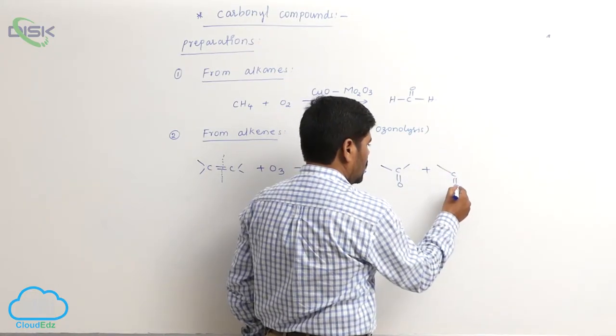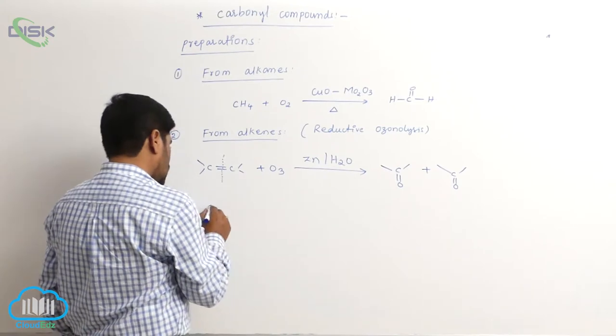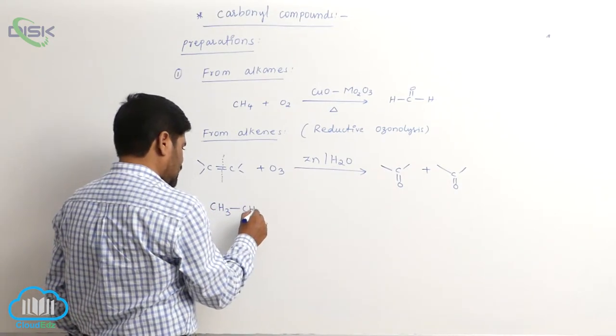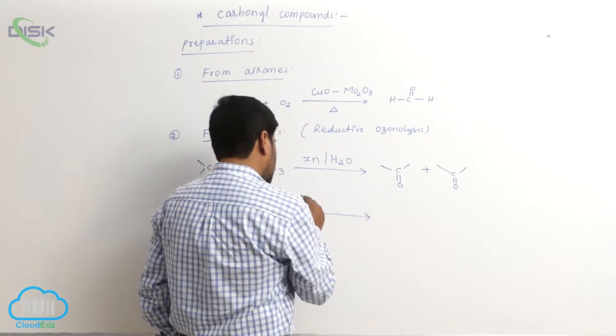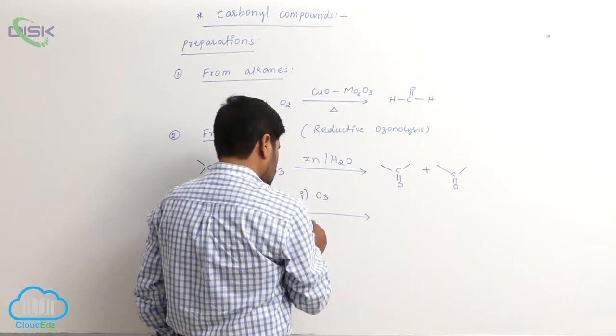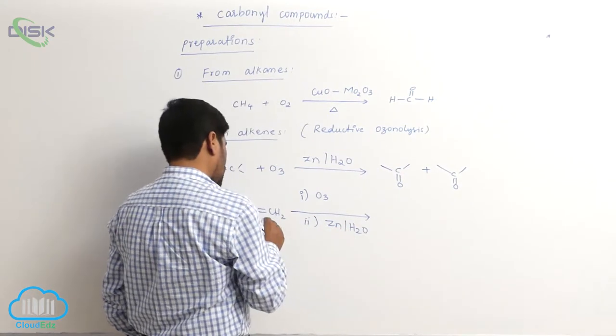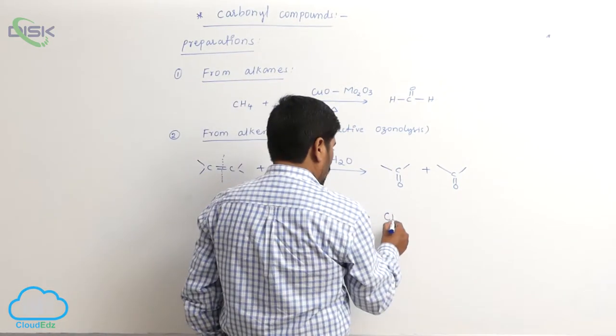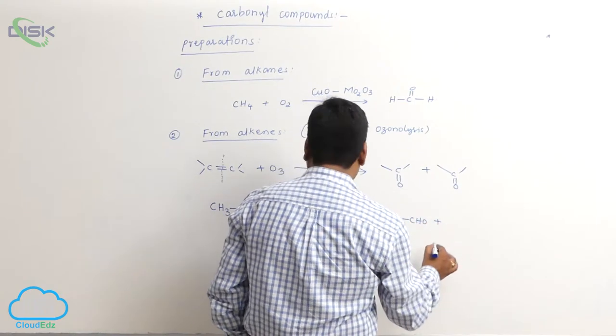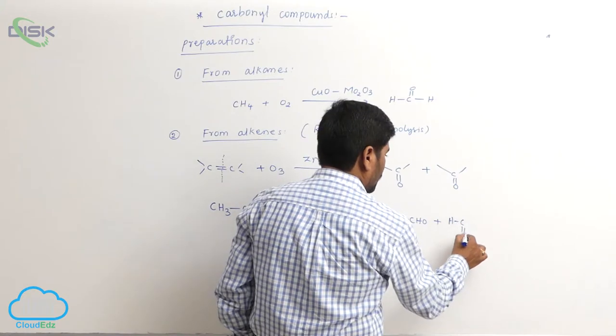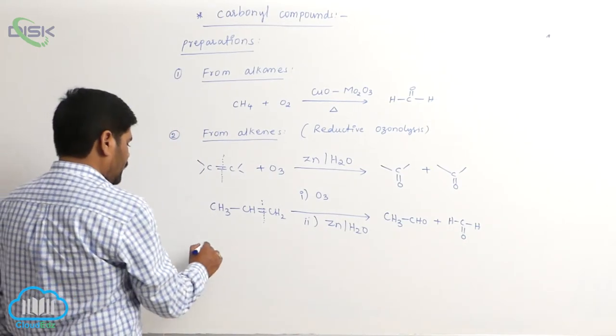For example, CH3CH double bond CH2. First step: O3. Second step: zinc in the presence of H2O. Breakage of the double bond produces one mole of aldehyde and one mole of formaldehyde.